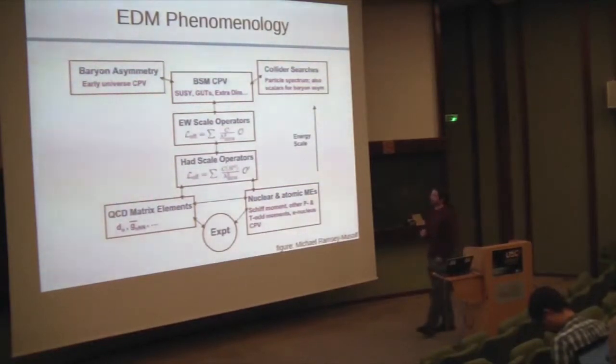To borrow a figure from Michael, this is one way of conceptualizing the flow down of high energy CP violation into things that experiments can measure. If you suppose that you have some beyond standard model CP violating physics, whether from supersymmetry or left-right symmetric models, you can look for this in collider searches. But to get down to what experiments actually measure—nuclear, atomic and electron moments—we have to have a relatively complex effective field theory apparatus.